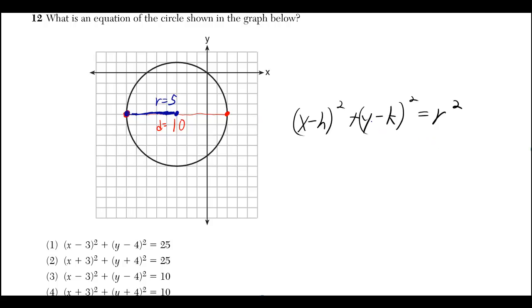And we've got to plug into the equation of a circle: x minus h squared plus y minus k squared is equal to r squared.